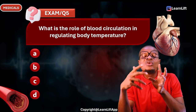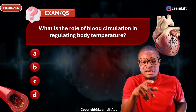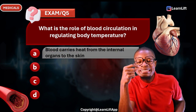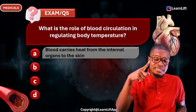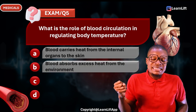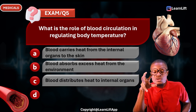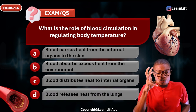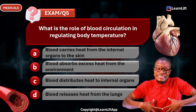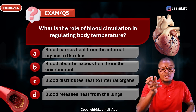Question five: What is the role of blood circulation in regulating body temperature? Option A: blood carries heat from internal organs to the skin. Option B: blood absorbs excess heat from the environment. Option C: blood distributes heat to internal organs. Option D: blood releases heat from the lungs. The correct answer is Option A — blood carries heat from internal organs to the skin to release it to the environment.